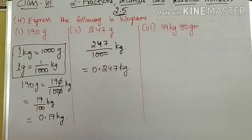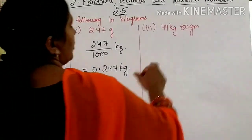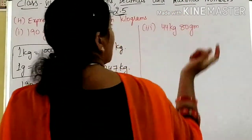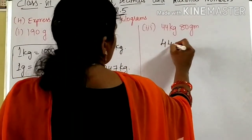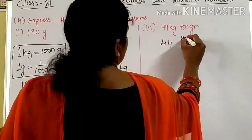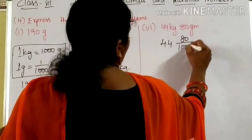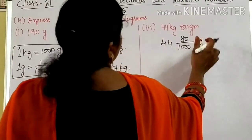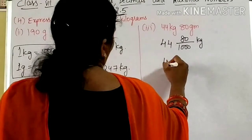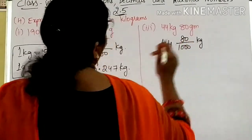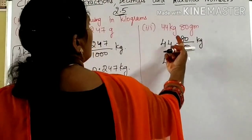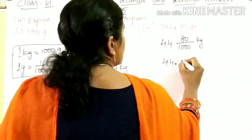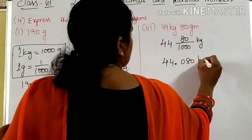Coming to the next one: 44 kg 80 grams. They are given 44 in kg. We have to convert 80 grams into kg. So 44 as it is, you write. Here, 80/1000 you should write — converting 80 grams into kg. In the denominator 3 zeros, but numerator has only 2 numbers. So the answer is 44.080 kg.